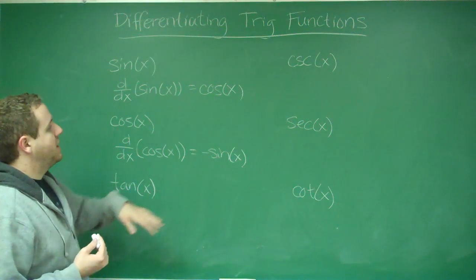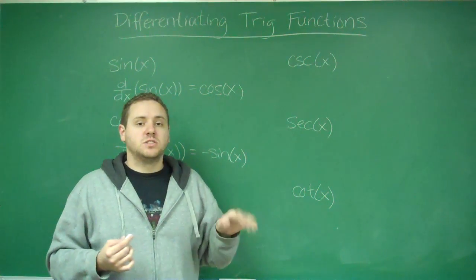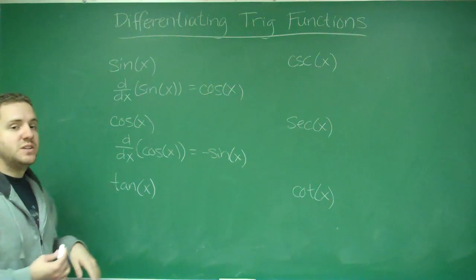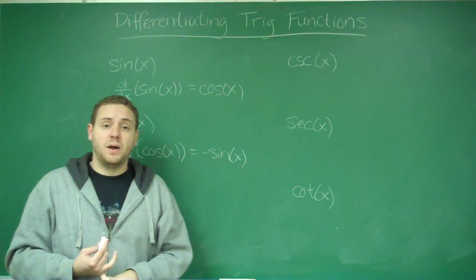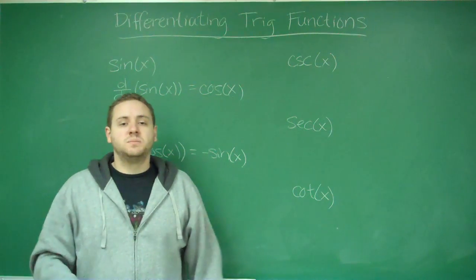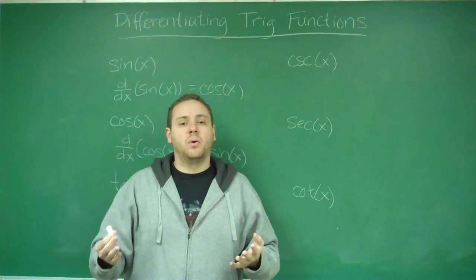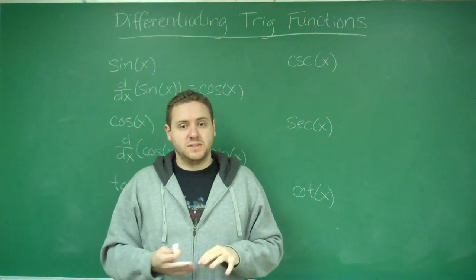Now, the rest of these, remember that cosecant is one over sine, secant is one over cosine, cotangent is cosine over sine, and tangent is sine over cosine. So if you think about it, knowing these two would lead you to all of these by using quotient rule, or for these, just doing sine to the negative one power and doing the chain rule, for example.